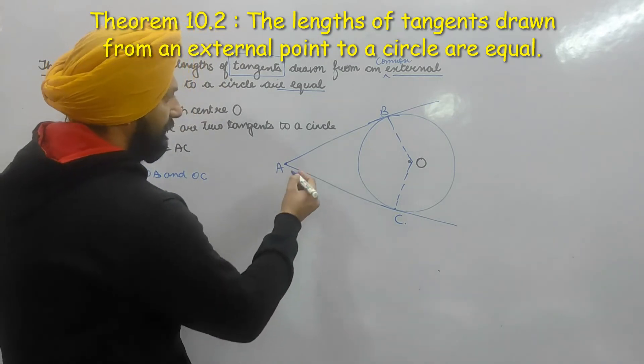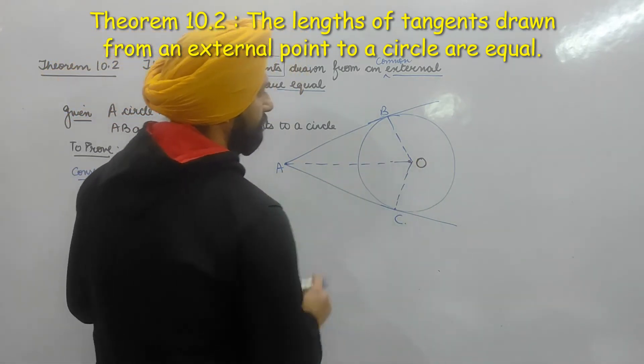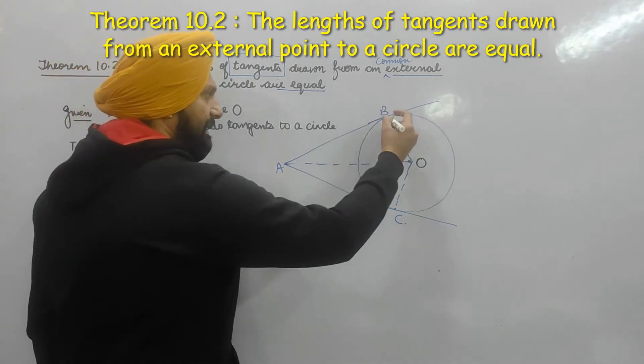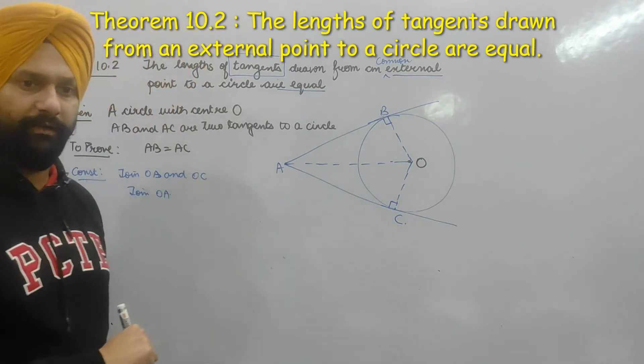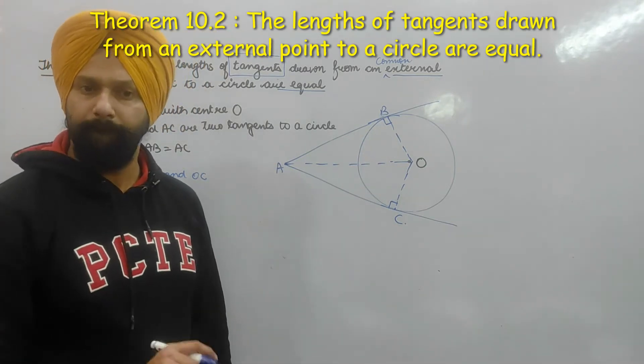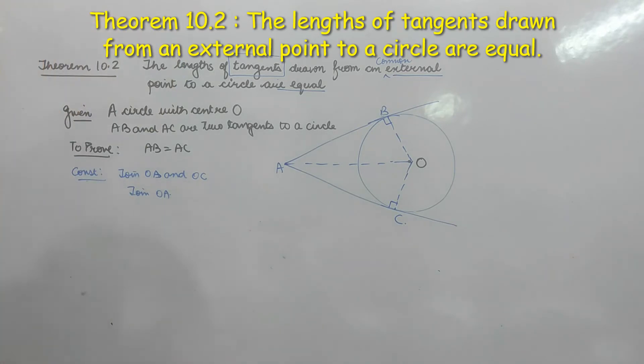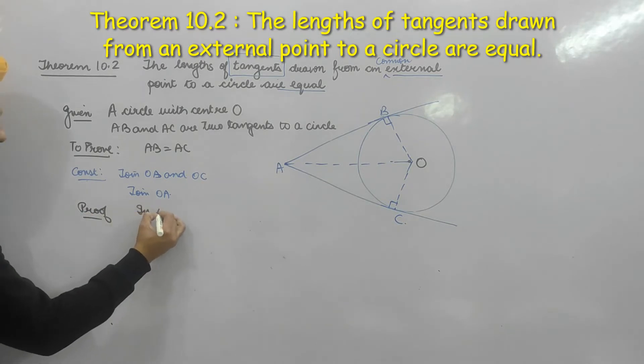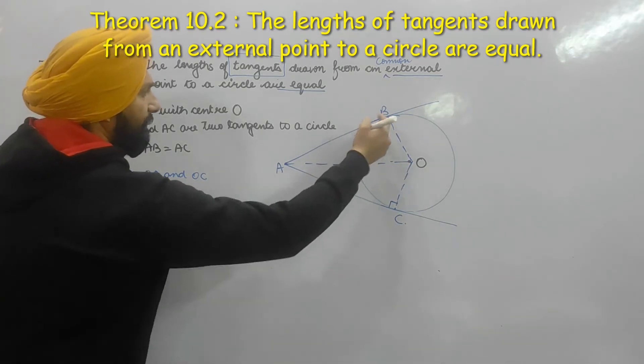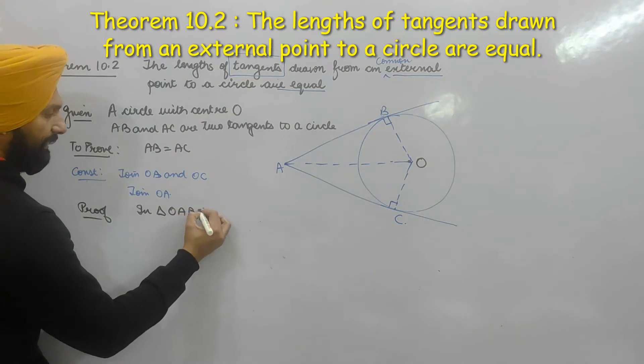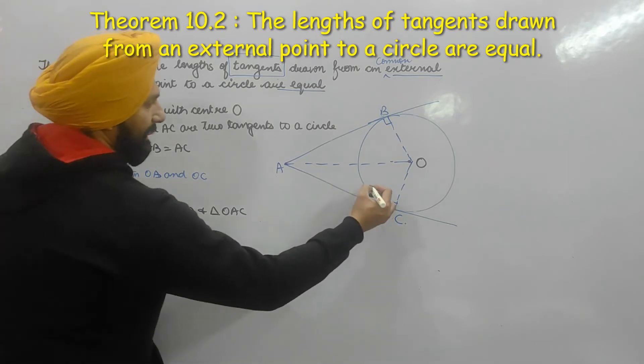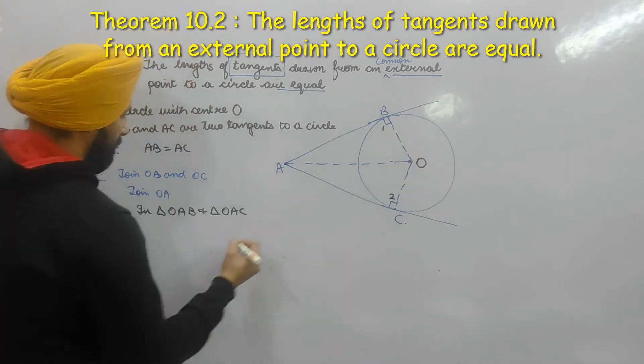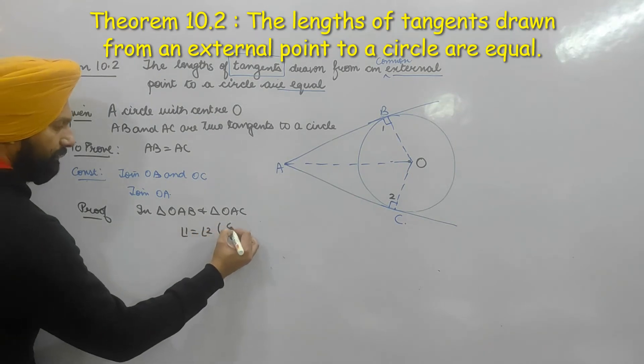And the other thing which I have joined is OA. This is radius perpendicular to the tangent, so this point is clear. Now come down to the proof. In triangle OAB and triangle OAC, can I write down angle 1 is equal to angle 2?